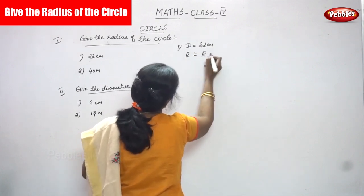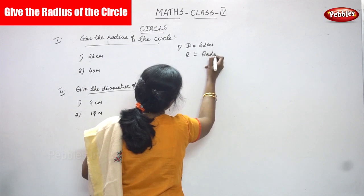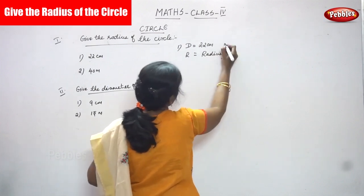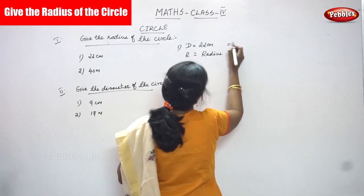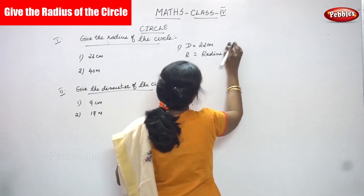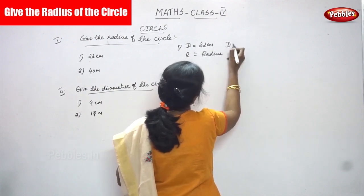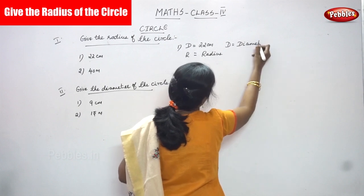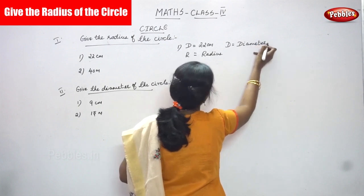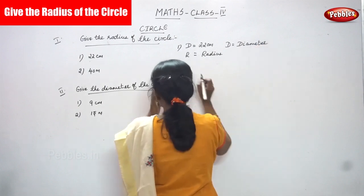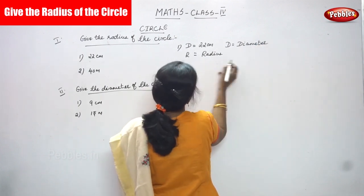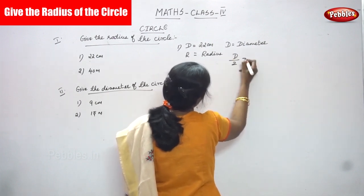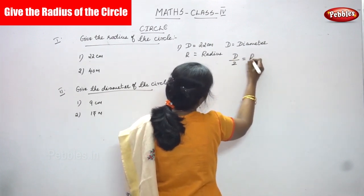R means radius. What is the formula of radius? D is equal to nothing but diameter. So, the formula is D by 2 is equal to R.